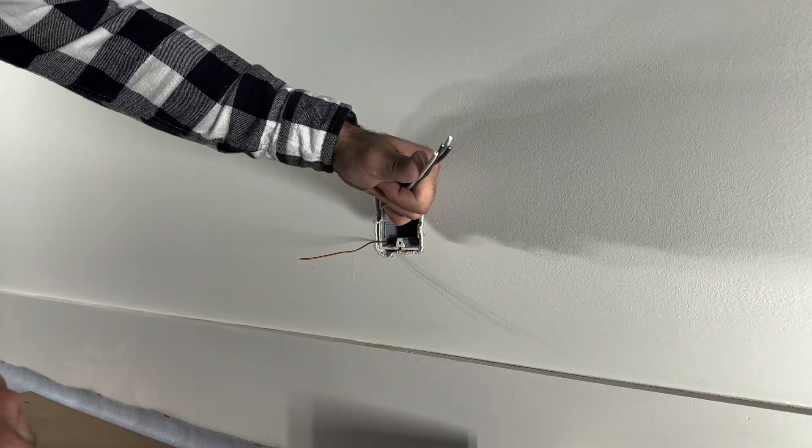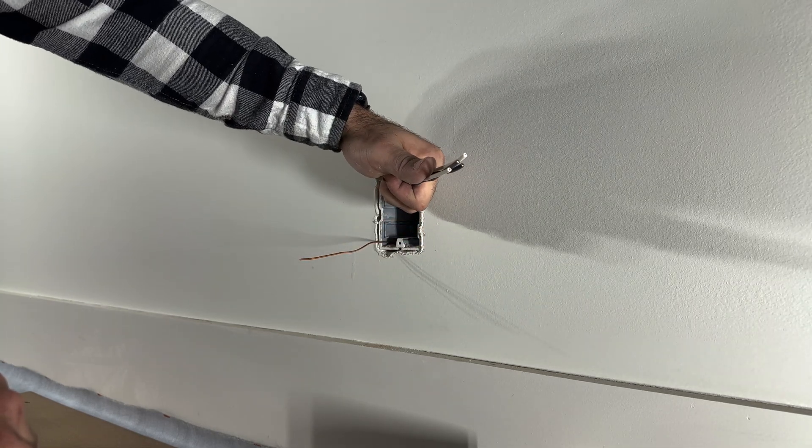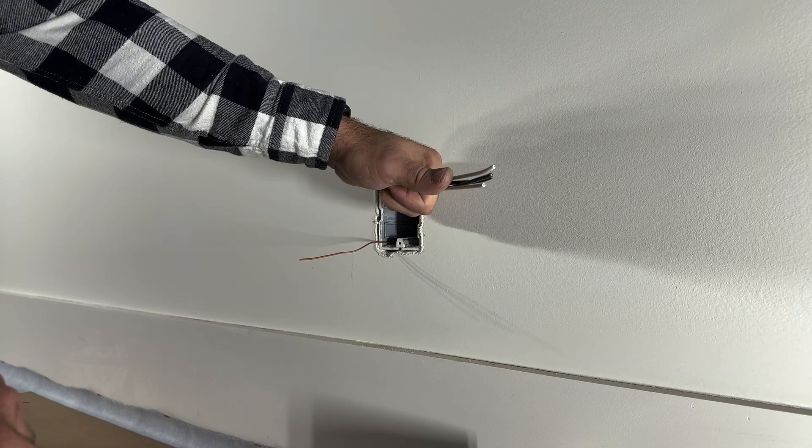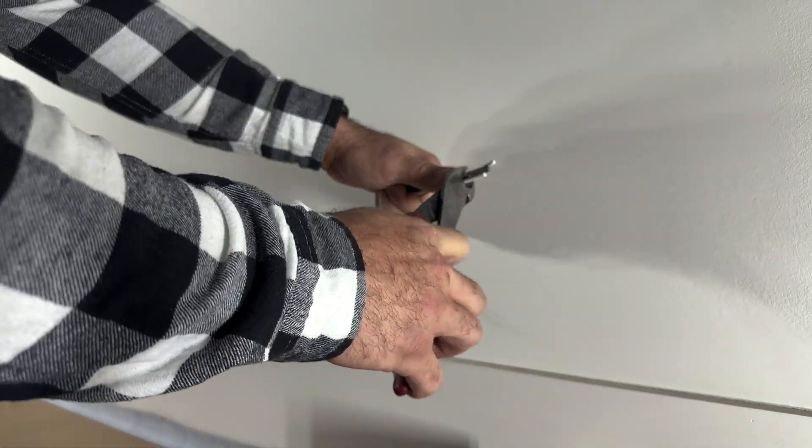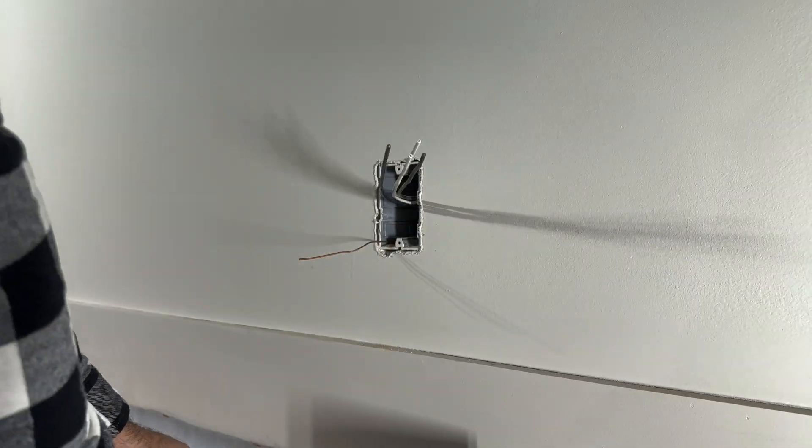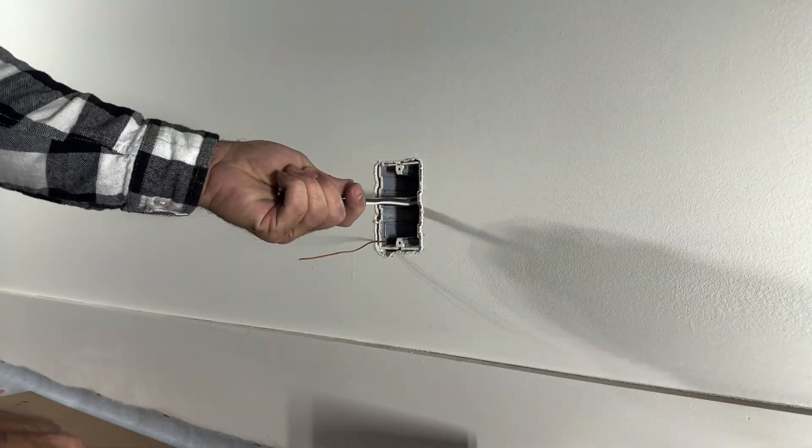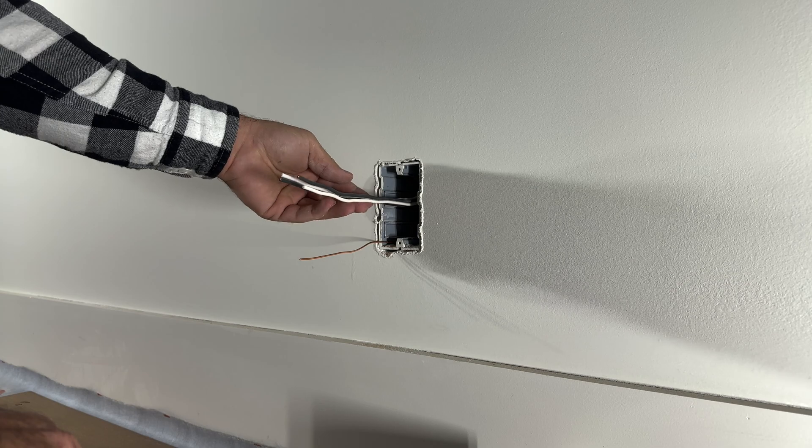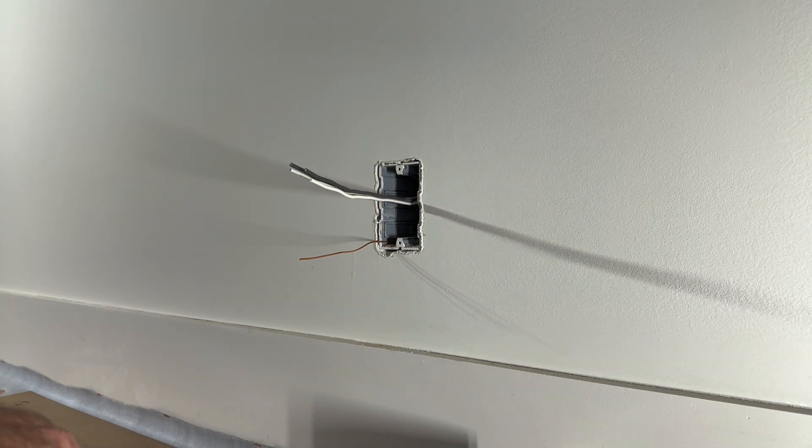I usually use this trick: fist and thumb, and that should give you around six to seven inches of the conductors just protruding outside of the box.